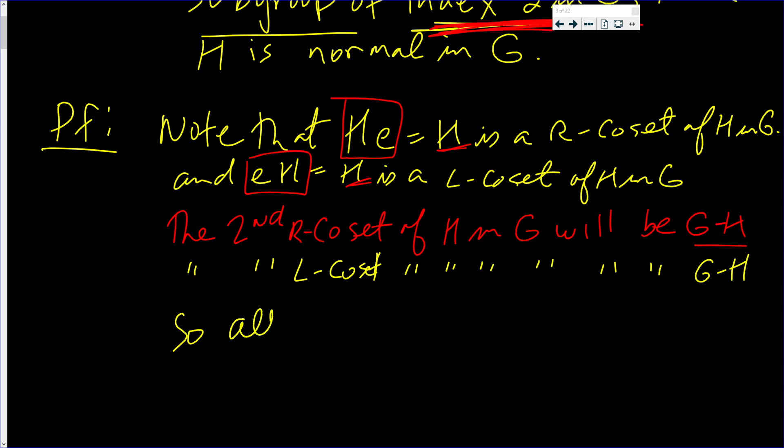So all right cosets are left cosets. Hence,